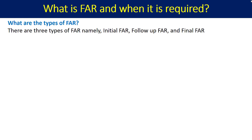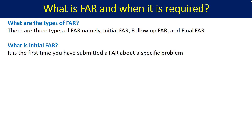So what are the different types of FAR? There are three types: initial FAR, follow-up FAR, and final FAR. The initial FAR is the first time you have submitted a FAR about a specific problem. It is the very first communication to the agency — for example, that this product has microbial contamination or an out-of-specification result. This is very immediate action, and this is the first time you are communicating the product issue to the agency.